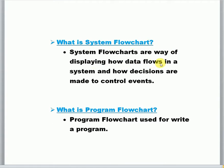System flowcharts are a way of displaying how data flows in a system and how decisions are made to control events. The system process involves flowing, processing, storage, and output — this defines the flow of a system flowchart. Program flowchart is used for writing programs; we use program flowchart only for making a program.